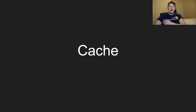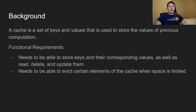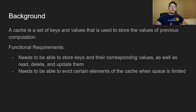Without further ado, let's get into this. The subject of today's video is going to be the low level design of a cache. As we know from systems design, it's relevant even on a single machine level — a cache is really just a key-value store that's useful for storing the results of recent computations so you don't have to reuse CPU cycles re-figuring out what that result was.